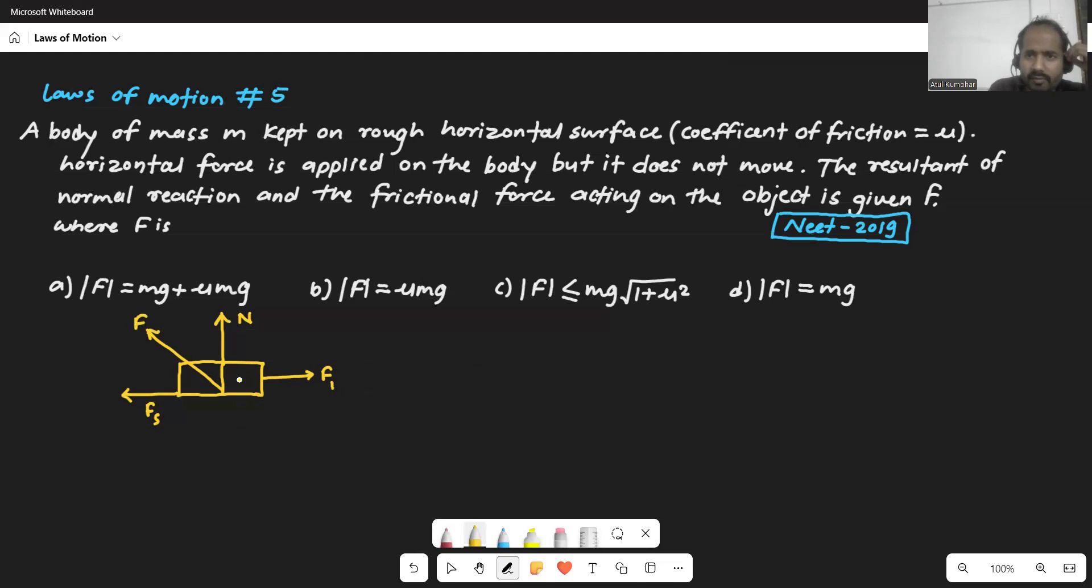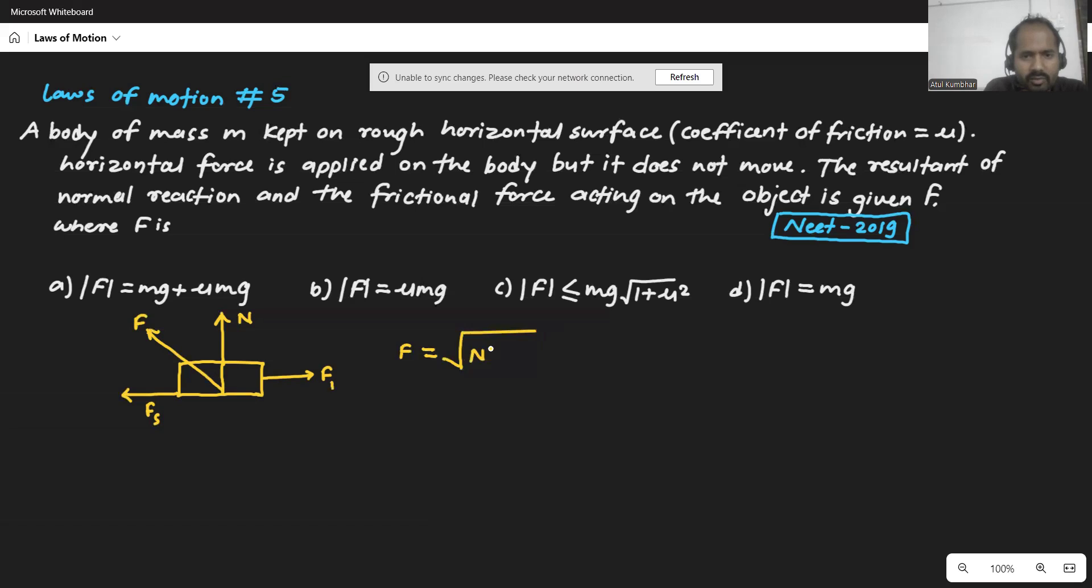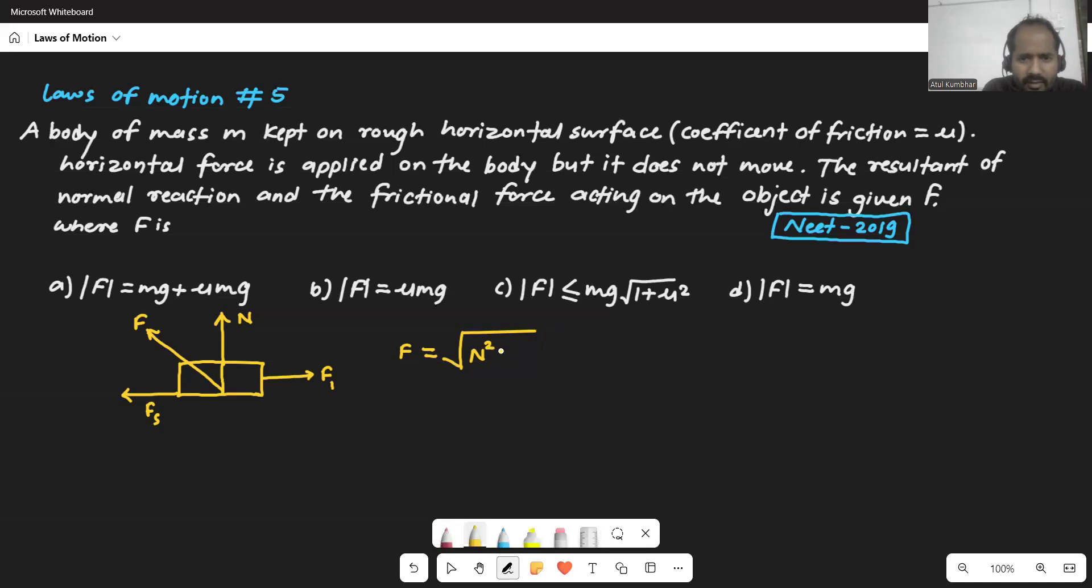Now see the magnitude of the resultant force will be how much? It will be the root of normal reaction squared, which is the vertical force over here, and plus Fs, which is the horizontal force here, square of Fs.